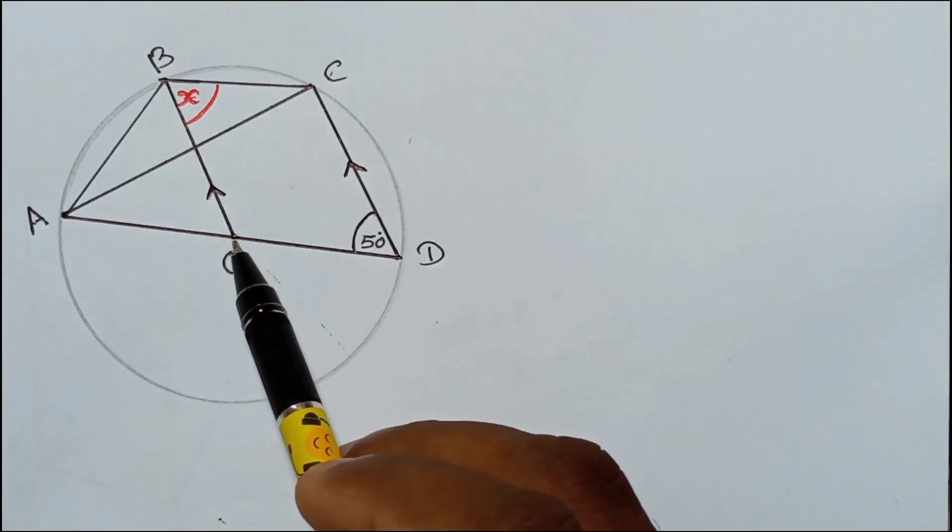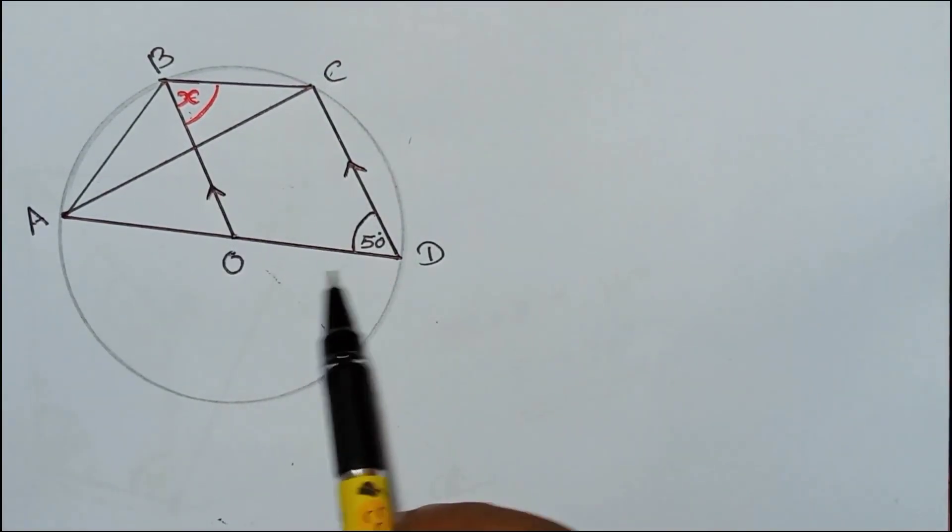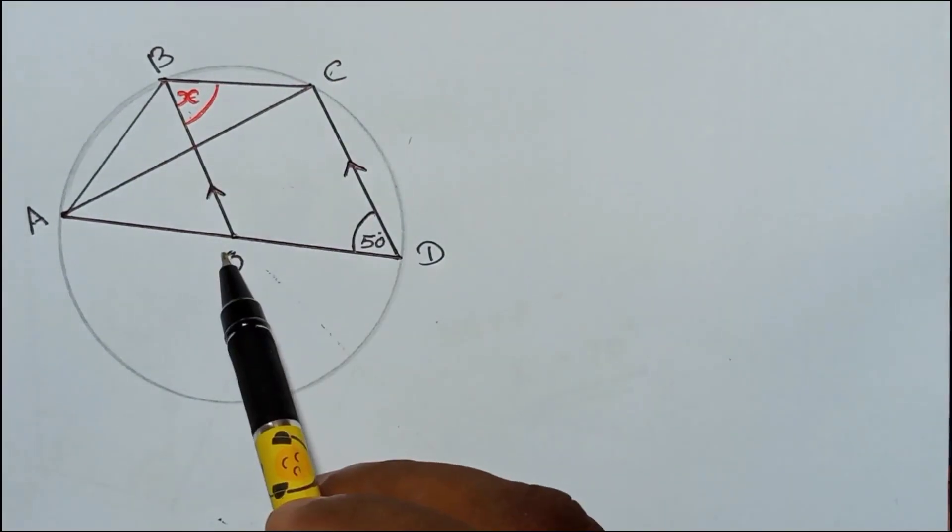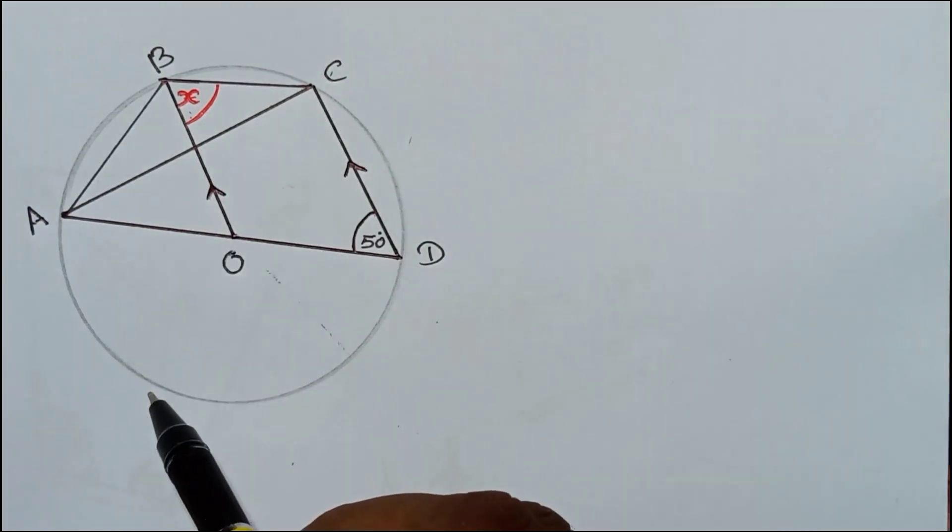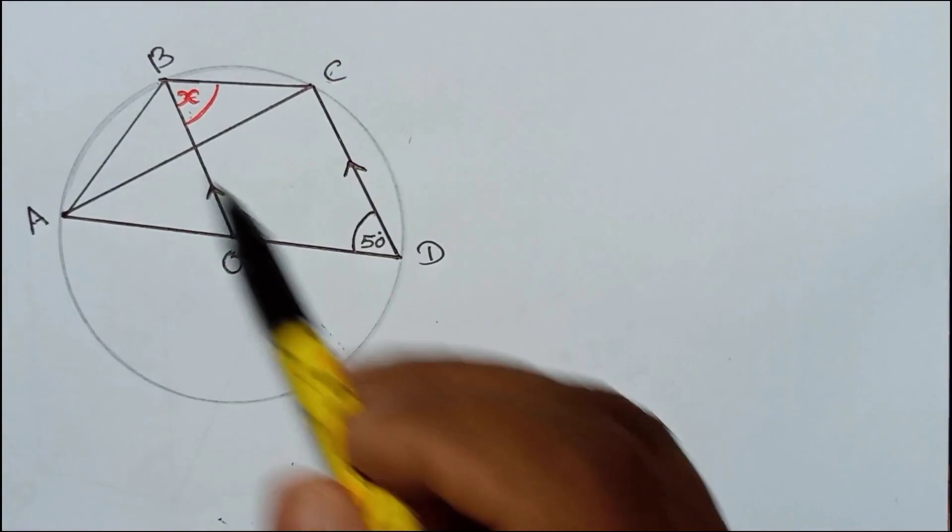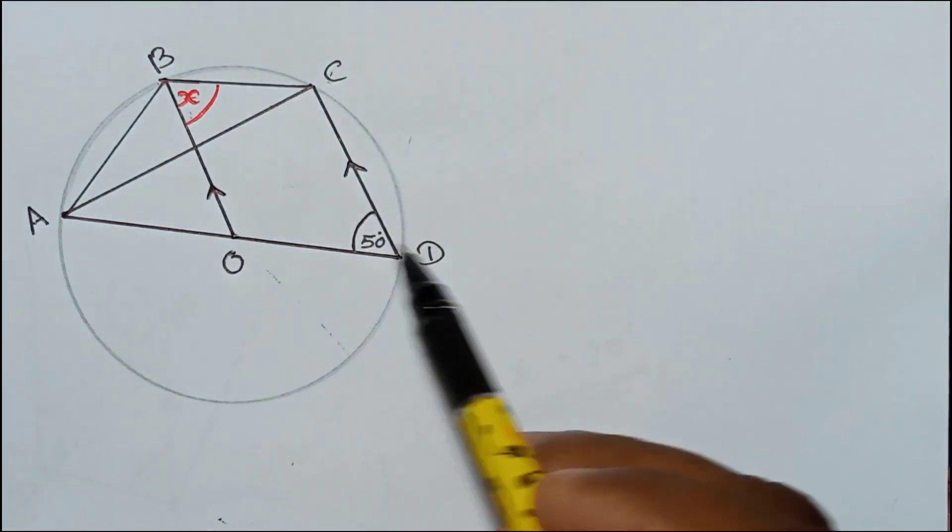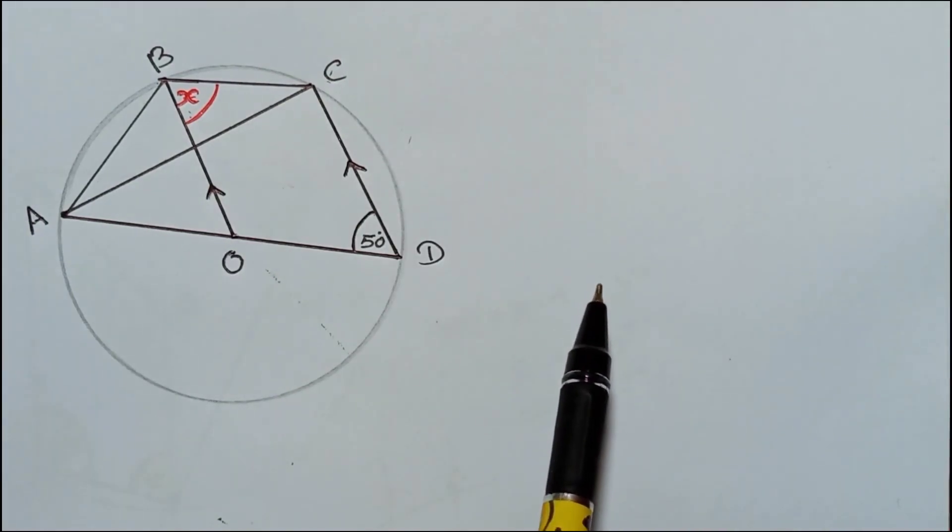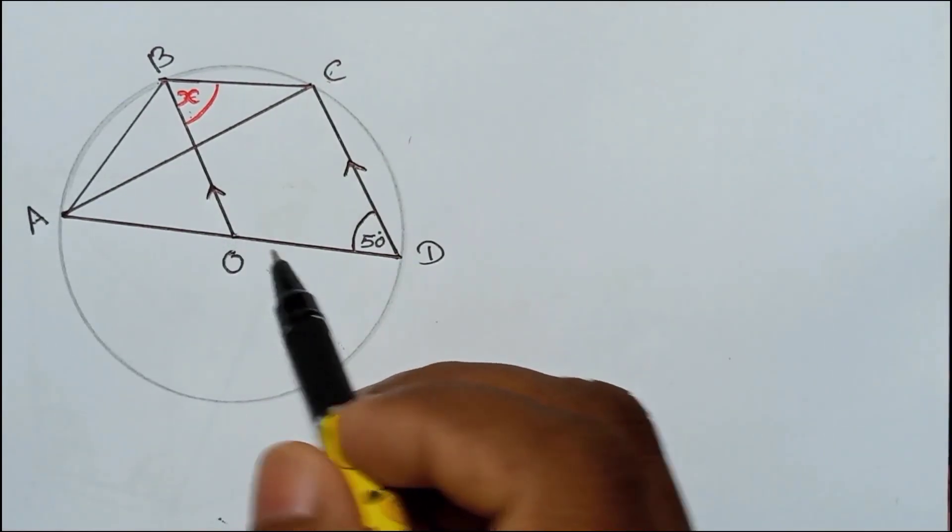Then some may try to get x using supplementary angles. No, you can use that way if it is a cyclic quadrilateral, but here BCDO is not a cyclic quadrilateral. Because why? This O is not on the circle circumference, it's the center. So that's why. Otherwise B, C, D are points on the circumference, but this is not on circumference, so you can't think BCDO is a cyclic quadrilateral. So you should understand that first.